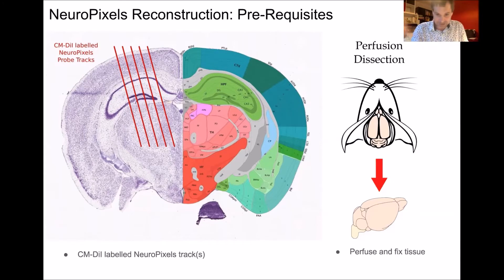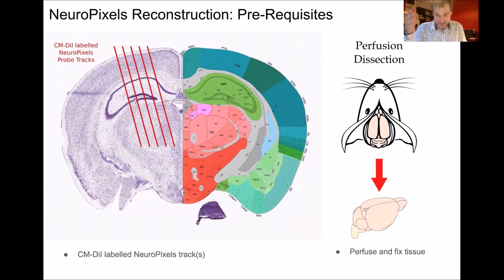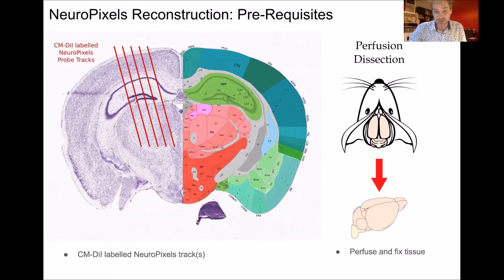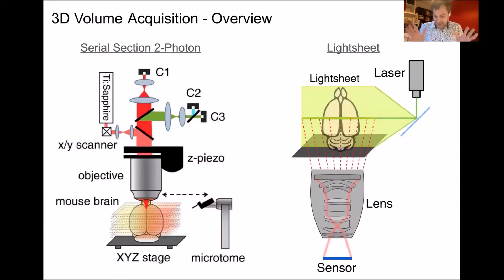The second prerequisite is obviously to have your brain perfused, fixed, and dissected. I would advise people to really make sure your brain is well fixed, because this can really help with sectioning and the reconstruction. And if you want to do any histology as well, it's always good to have the tissue properly fixed. So basically, you've got your brain and hopefully your labelled tracks within it.